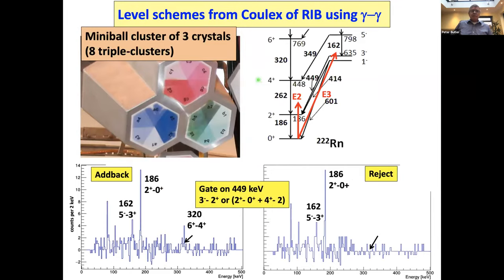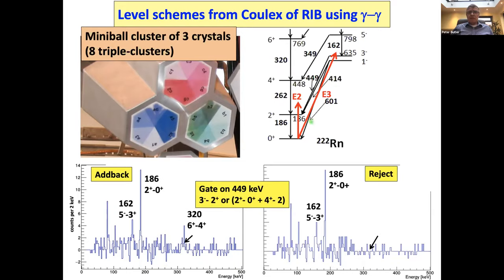A brief mention about how we operated MiniBall for these experiments. MiniBall consists of eight triple clusters — three crystals in the same cryostat, each crystal having individual segmentation. Normally you run MiniBall in so-called add-back mode: if an incident gamma ray Compton-scatters from one crystal into an adjacent crystal, you add the energies together, effectively making it one large solid-angle detector. However, the problem with that when doing gamma-gamma coincidences to extract decay schemes is a high probability of true pile-up.